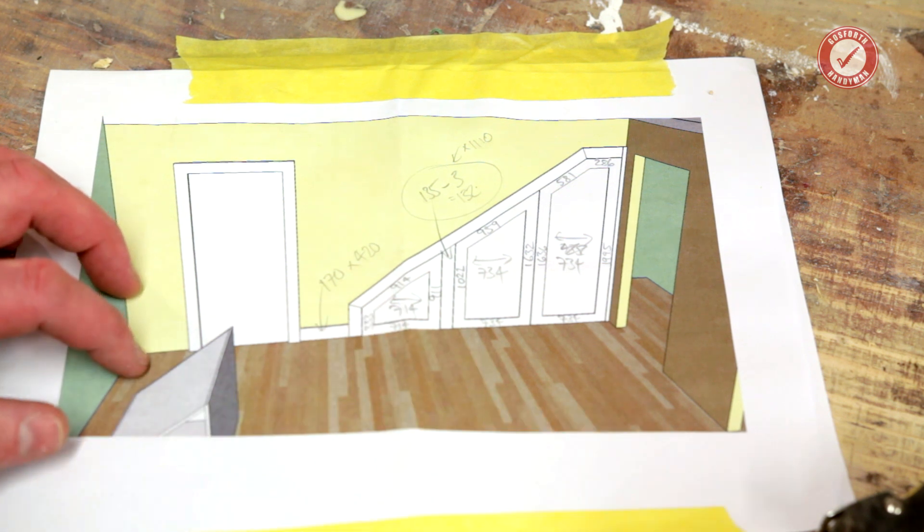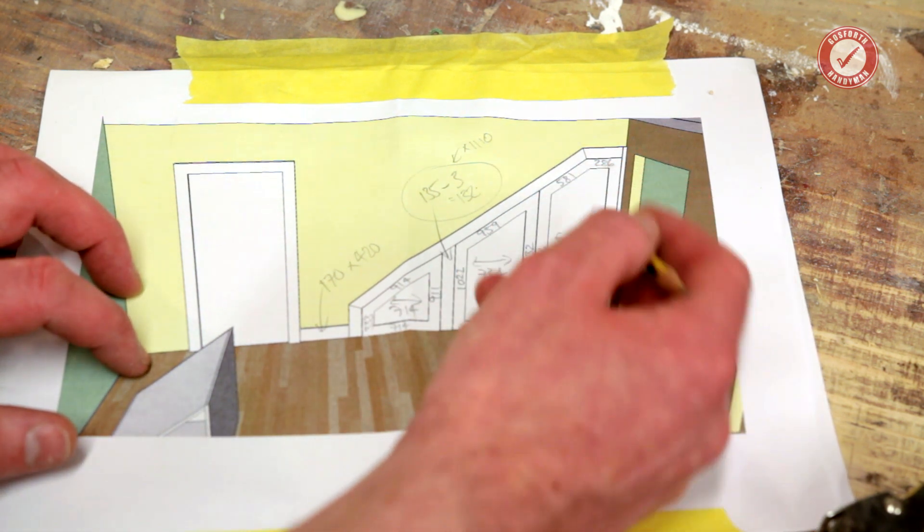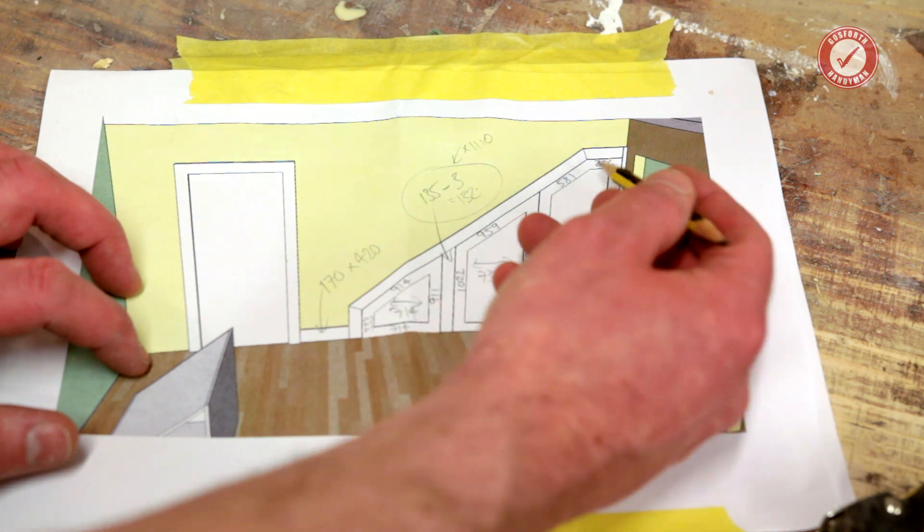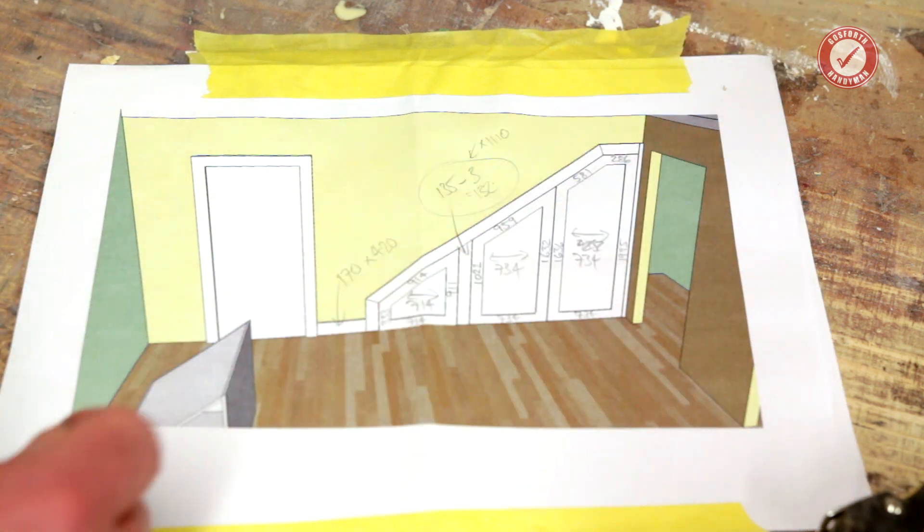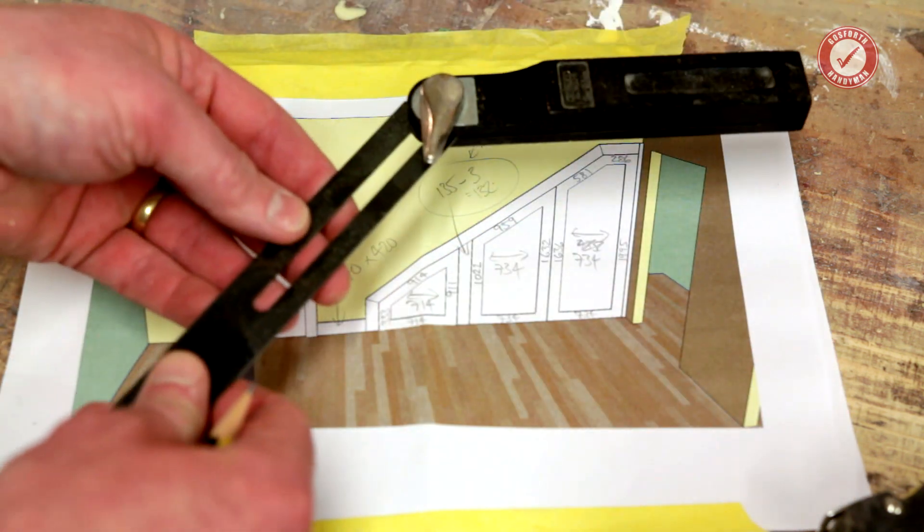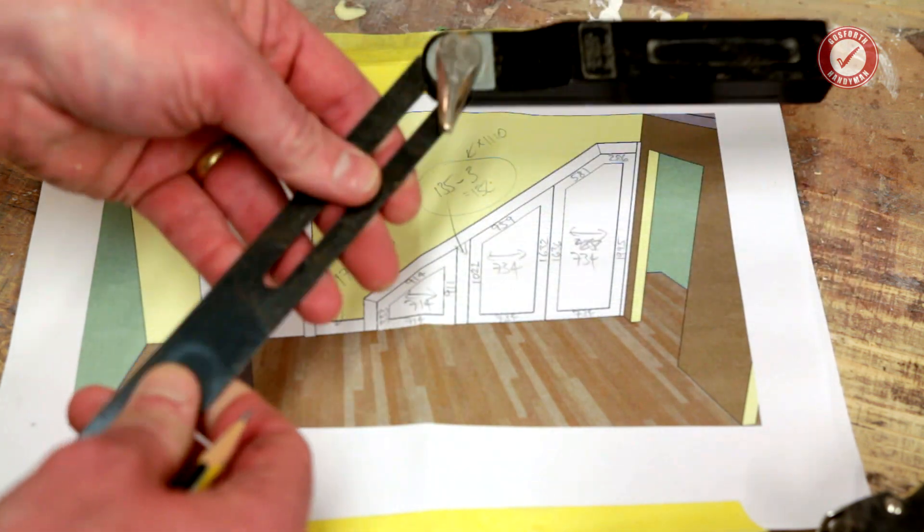In this particular example here, I'm making this door and all of these need to be at a particular angle. This is the angle that I've measured on site and I've locked it into my angle finder.